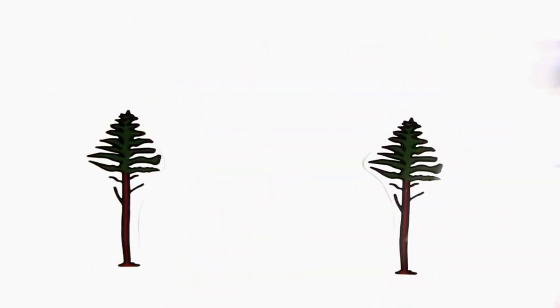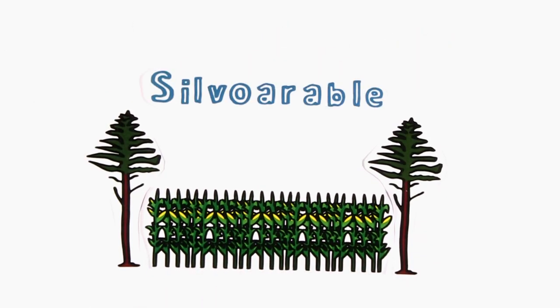There are three main classifications of agroforestry systems. The first, silvo-arable, includes trees with crops.